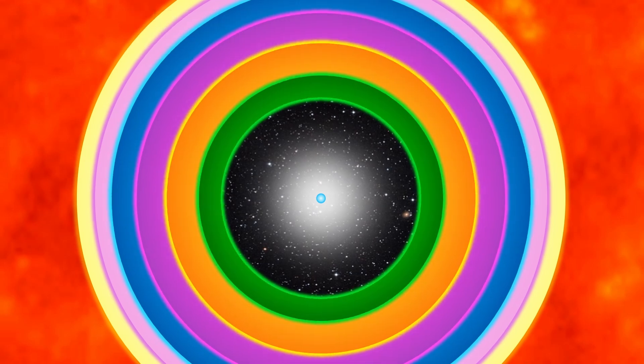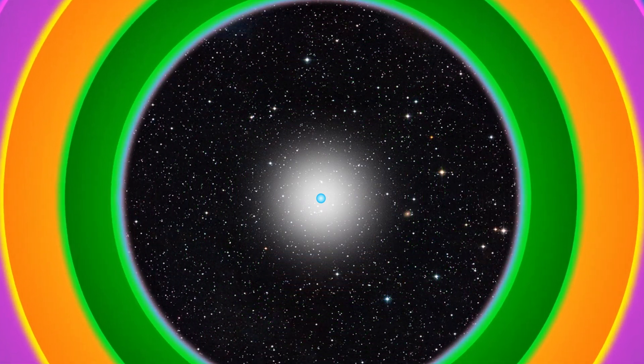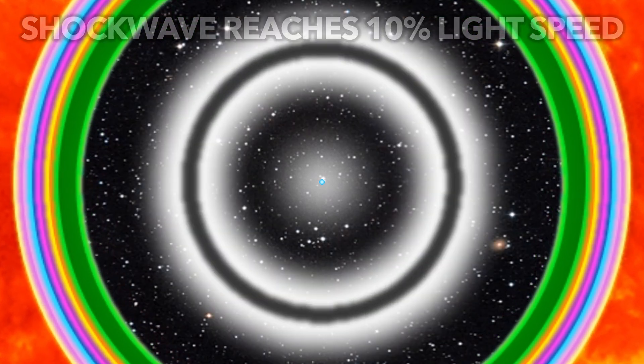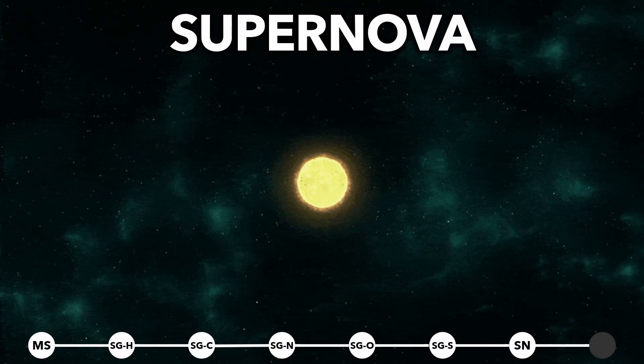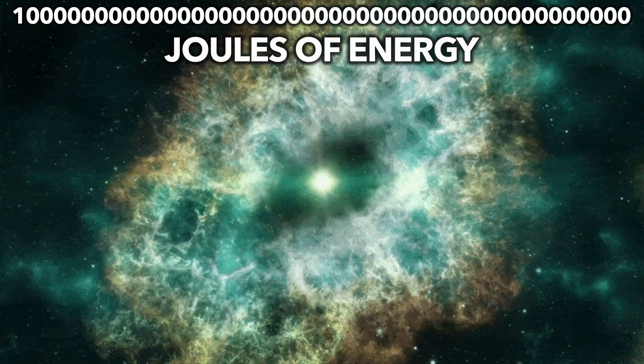The outer layers of the core hit the neutron star at 23% light speed, sending back a powerful shockwave. Neutrinos emitted from the inner core propel the shockwave to 10% light speed, causing the star to explode as a giant supernova with the energy of 3 million billion suns.